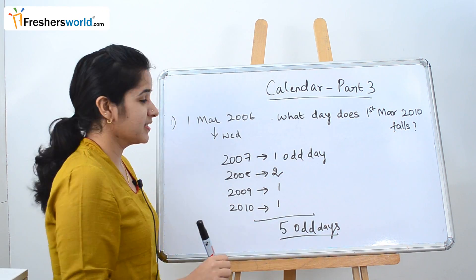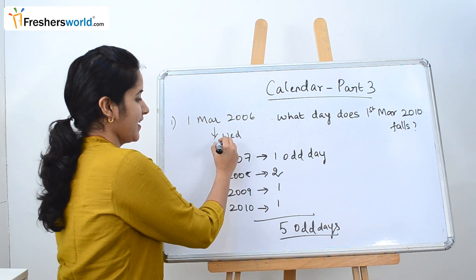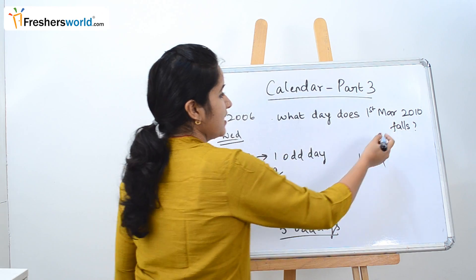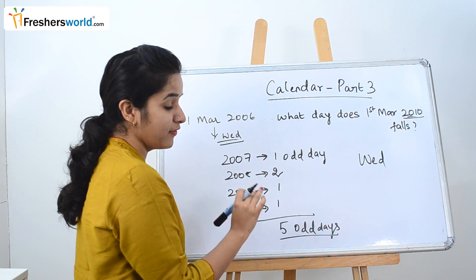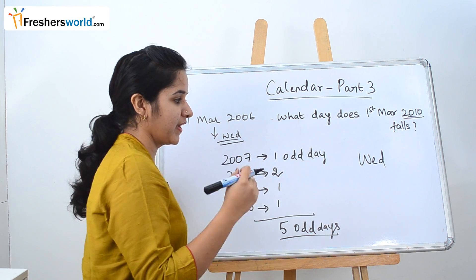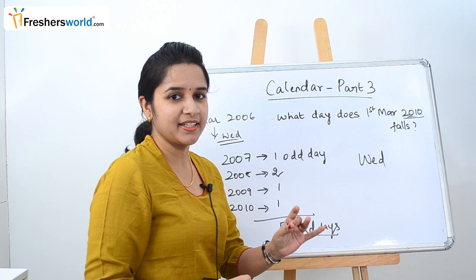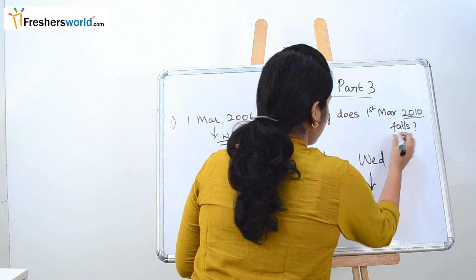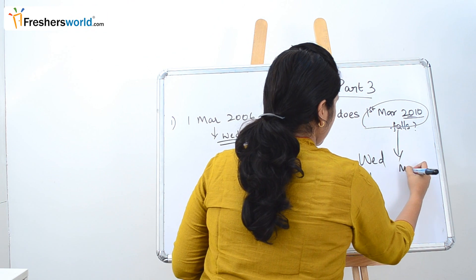The question states 1st March 2006 is a Wednesday. We have 5 odd days in between, so we add 5 to Wednesday. Wednesday plus 5 gives Thursday, Friday, Saturday, Sunday, and Monday. So 1st March 2010 falls on Monday.